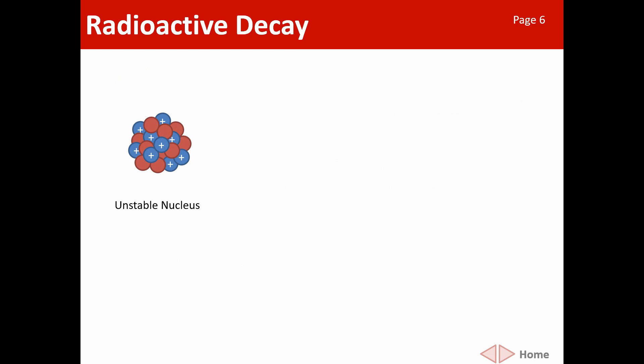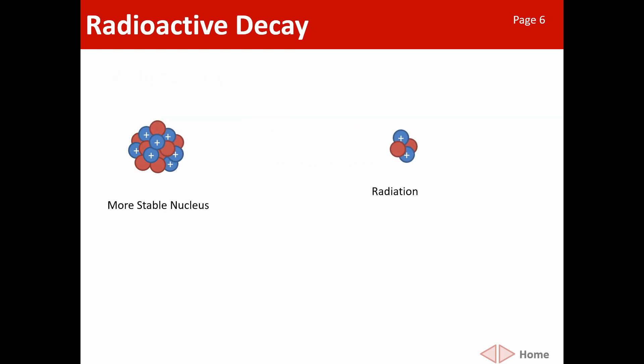Generally, an unstable nucleus has too many protons or too many neutrons. It tries to get rid of excess energy, usually by splitting off a particle. In this case we have two protons and two neutrons coming off, leaving a slightly smaller, more stable nucleus behind. This ejected particle is radiation — radiation just means to radiate out some sort of energy or particles. That type of particle with two protons and two neutrons is known as an alpha particle.